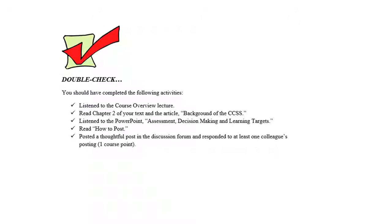If course points are assigned I indicate that. One course point doesn't sound like a lot, but it's really one point of your overall hundred-point course grade. So if you did everything perfectly you'd get 100 points — if you missed this particular module you'd only be able to get 99 points. So it's one percent of your grade.